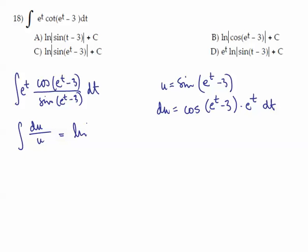is simply ln of the absolute value of u plus c, which is ln of the absolute value of sine of e to the t minus 3 plus c.